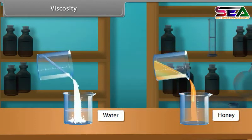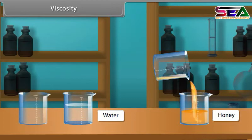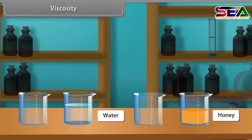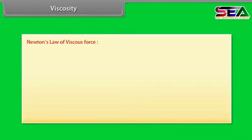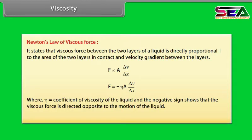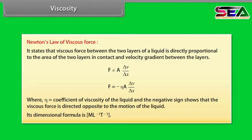Viscosity is defined as the property of a liquid by virtue of which an internal resistance comes into play that tries to destroy the relative motion between layers. This internal resistance acts tangentially on the layers of the liquid. Newton's law of viscous force states that viscous force between two layers is directly proportional to the area of contact and the velocity gradient. F = −η × A × (ΔV/ΔX), where η is the coefficient of viscosity. The negative sign shows the force is directed opposite to the motion. Its dimensional formula is ML⁻¹T⁻¹.